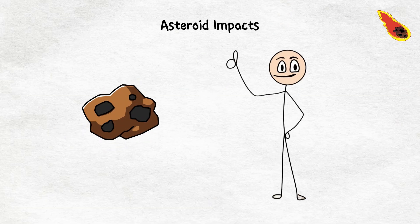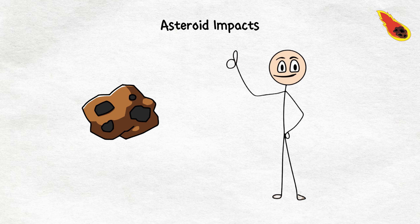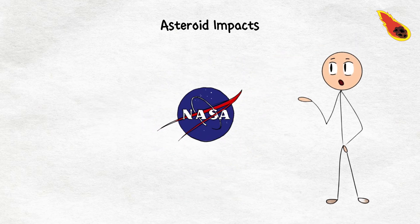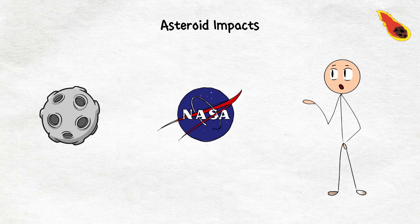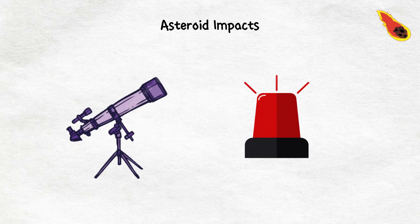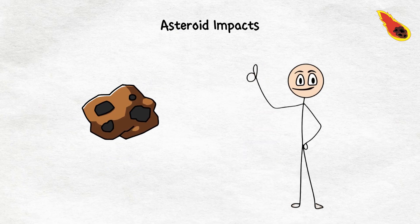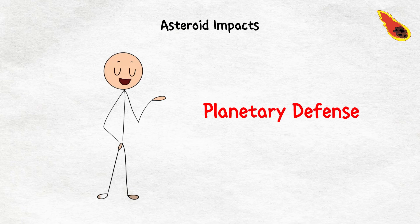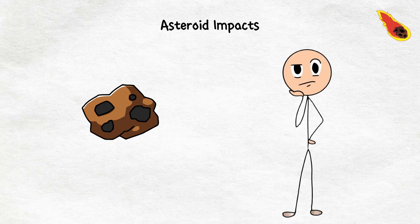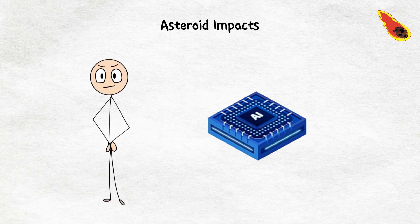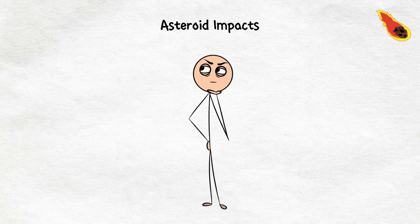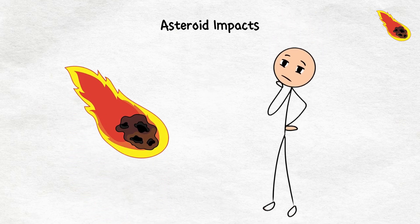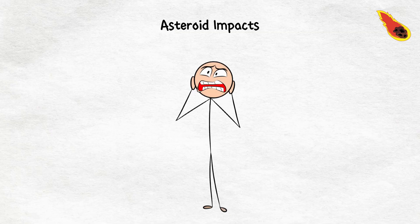Asteroids are sneaky little buggers. And there could always be one lurking out there, ready to make a surprise visit. NASA and other space agencies are keeping a close watch on these space rocks. They have got telescopes and detection systems scanning the skies 24-7, just in case one of these asteroids decides to pay us a surprise visit. And if they do spot one heading our way, they have got a plan. It is called planetary defense. Essentially, they are working on ways to nudge these asteroids off course. But even with all this fancy technology, it is not a perfect system. There could always be a rogue asteroid lurking somewhere, waiting to make its move. And if we can't nudge it off course, well, let's just say we would be in for a very bad day.